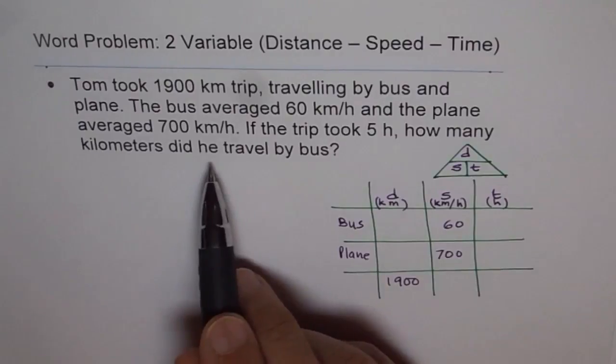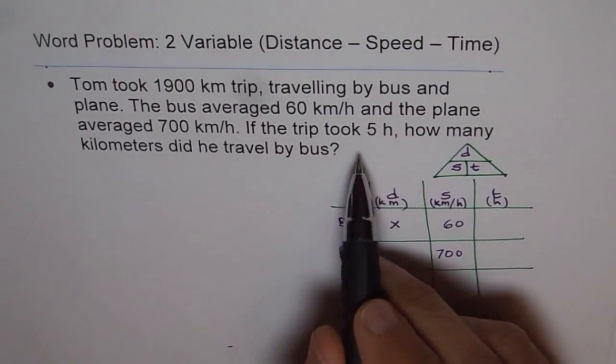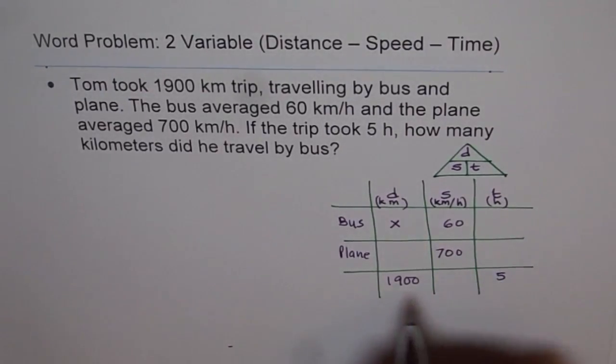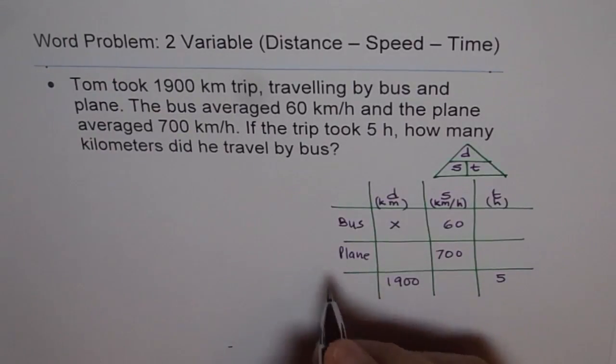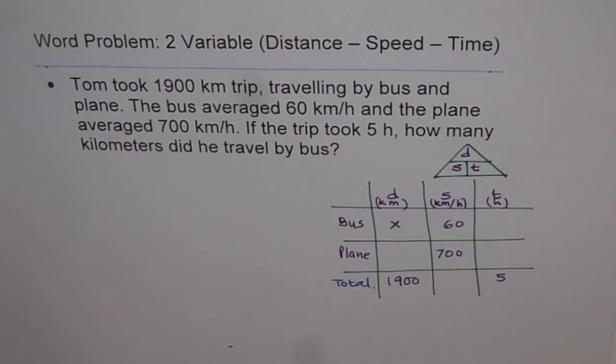If the trip took 5 hours, how many kilometers did he travel by bus? So how many by bus? That means variable. So we will put X kilometer by bus and total trip time is 5 hours. So we will write total time here. So that is our total. Whatever we will do, we will write sum or total here at the end. So total time is 5 hours for us.